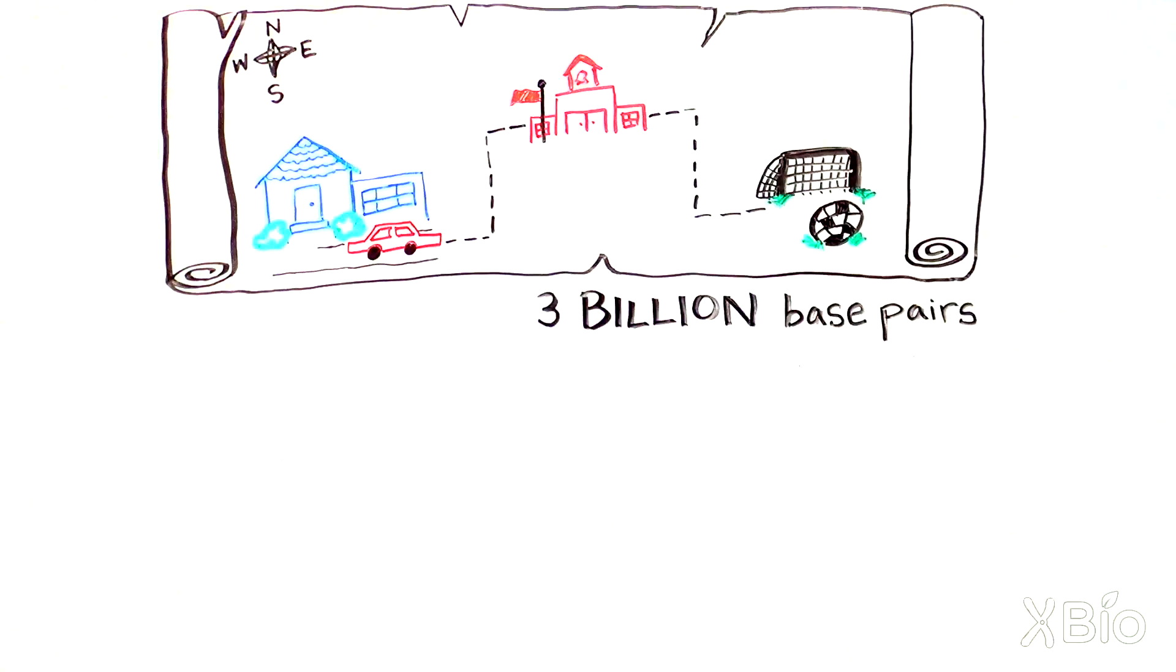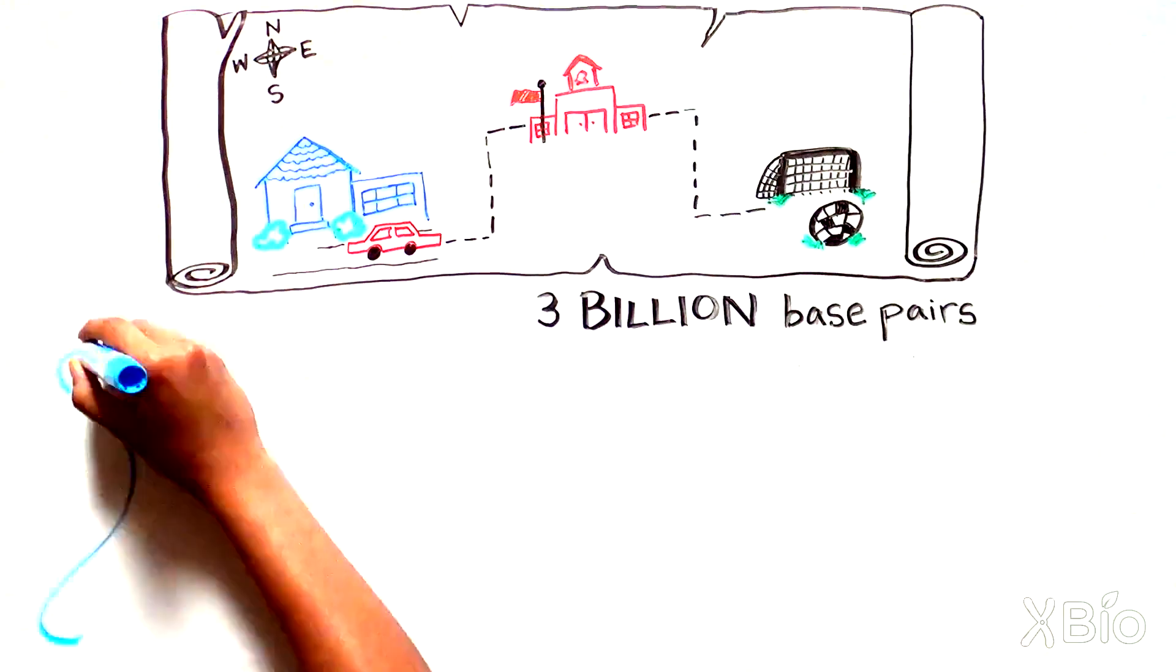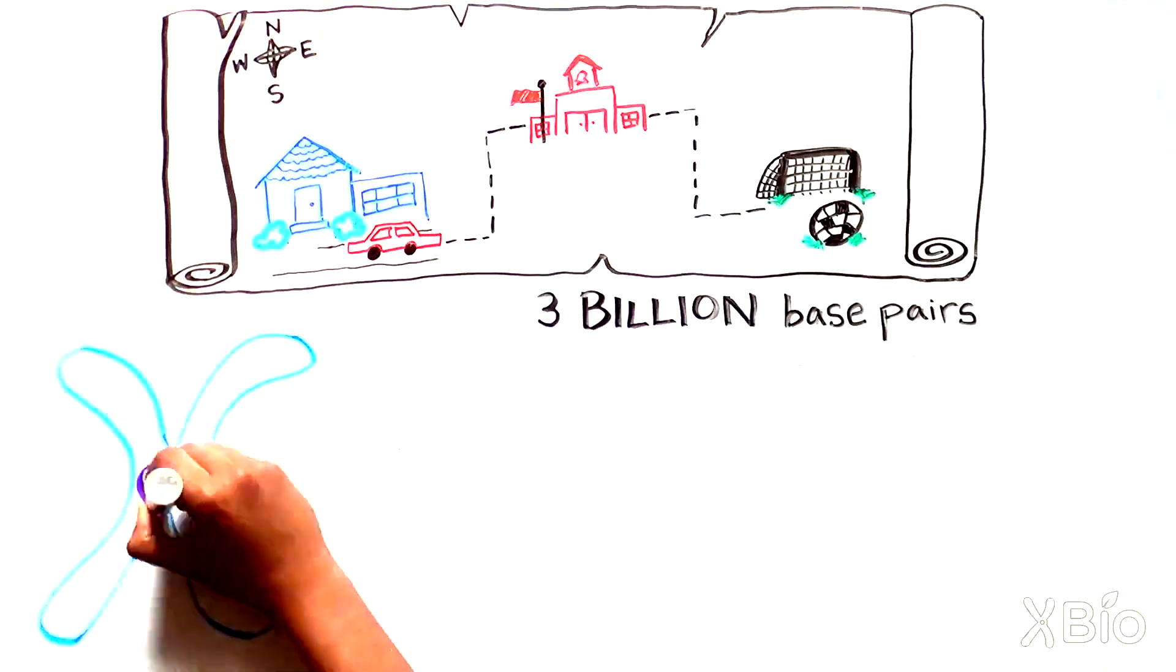3 billion base pairs in humans. The DNA is organized into several long strands called chromosomes.